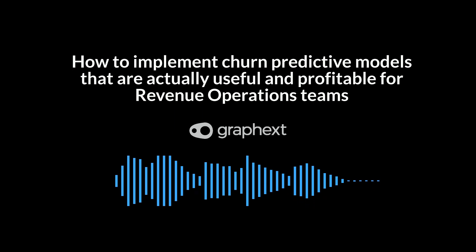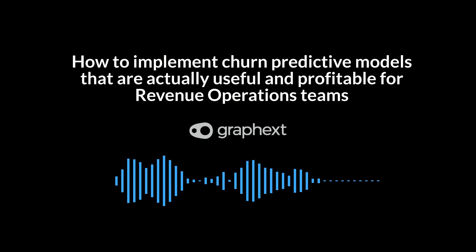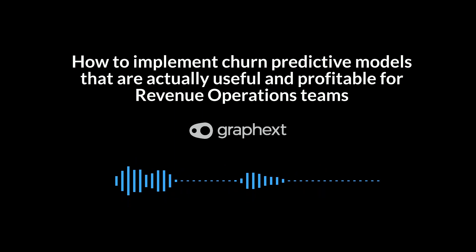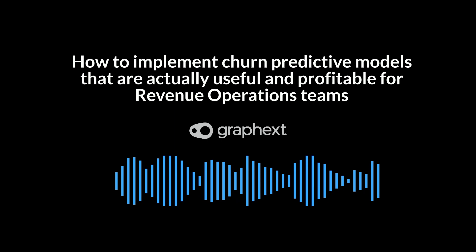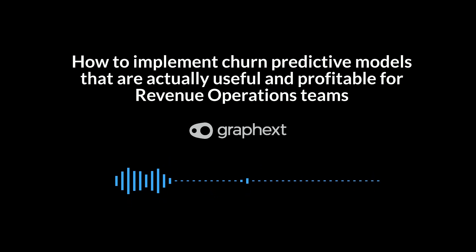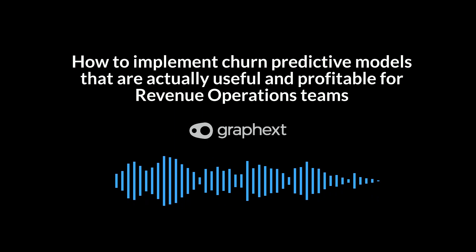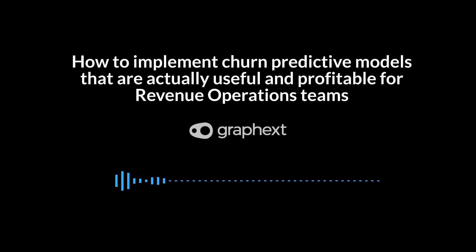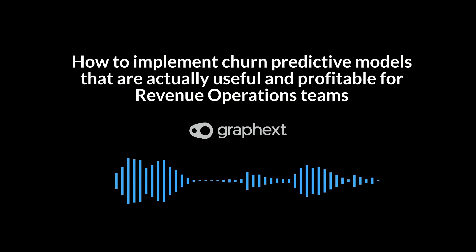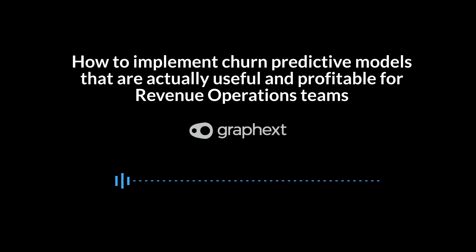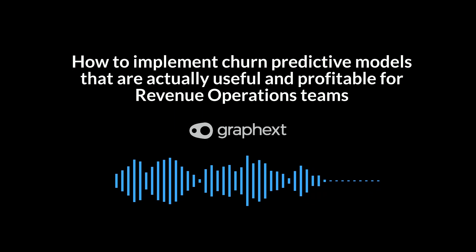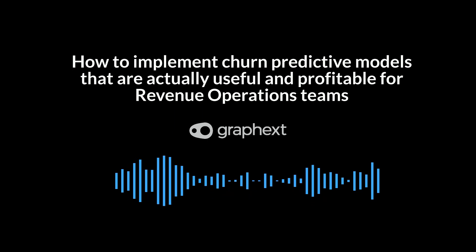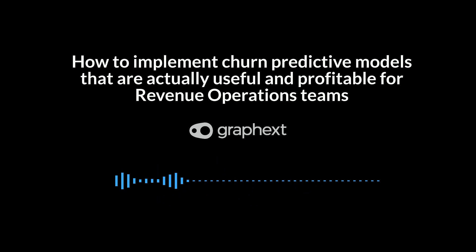The article kicks things off by talking about engagement levels, broken down into a few different categories. You've got those customers who never really seem to get going — just never really engaged. Then there are those who were totally vibing for a while and then just faded out. And of course, you've got those sudden, out-of-nowhere exits. The article points out that each of those scenarios could point to a totally different root cause. For example, a customer who never really engaged might just be a poor customer fit right from the get-go.